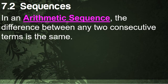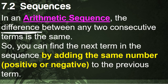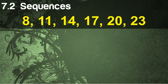In our first type of sequence, we're talking about arithmetic sequences. This is where the difference between any two consecutive terms is always the same. You can find the next term in the sequence by adding the same number — either a positive or negative number — to the previous term.